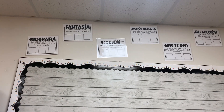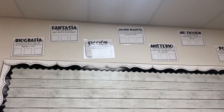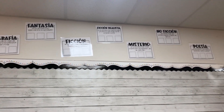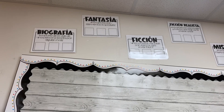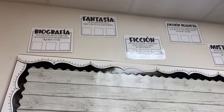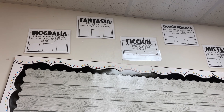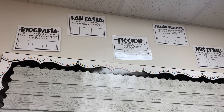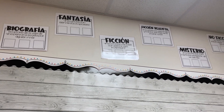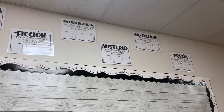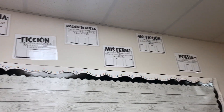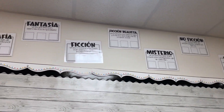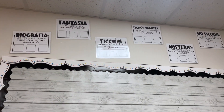So I just put these up — they're different genres — and then in the square I'm going to print pictures of the read-alouds that we read, and then we can categorize them as we read them.